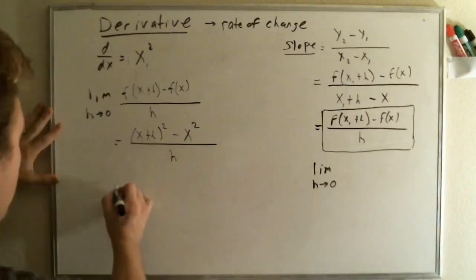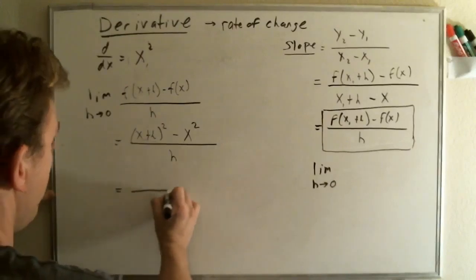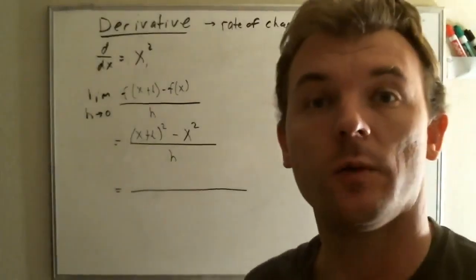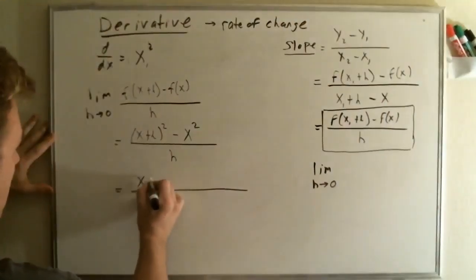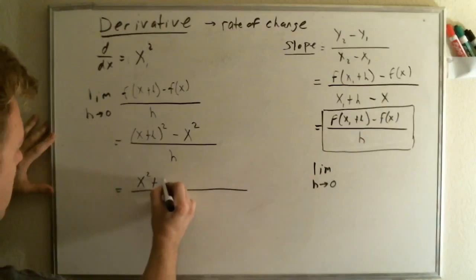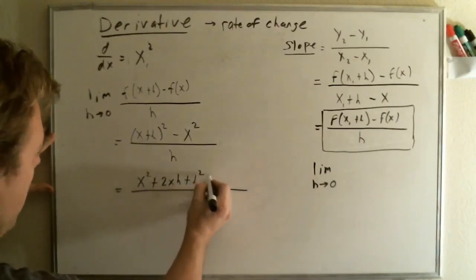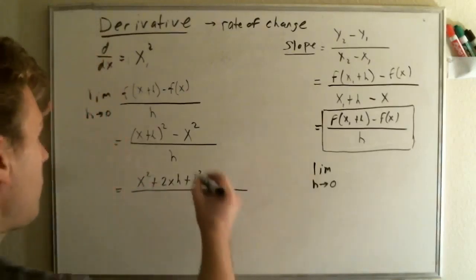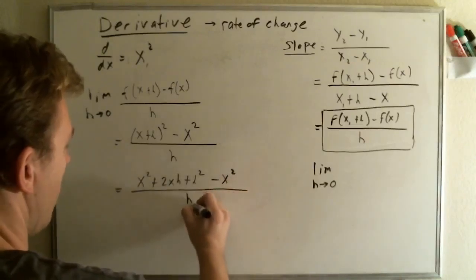So, now, let's go ahead and say, remember, don't forget your limit. So, we're going to have to expand this. We're going to have to expand this to a binomial. So, we have x squared plus 2xh plus h squared. We expanded that. Minus x squared over h.